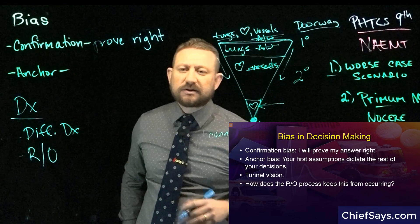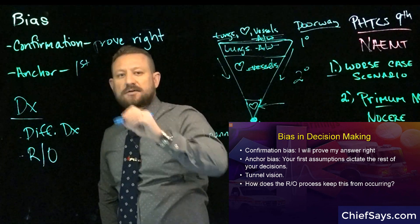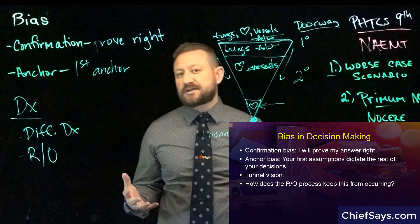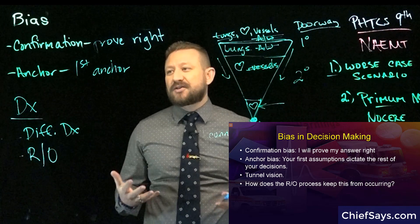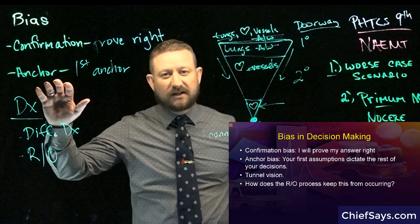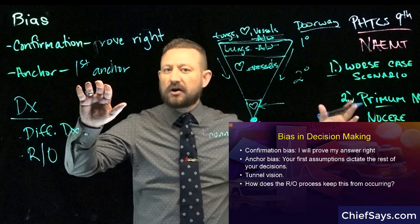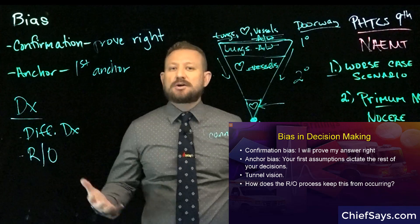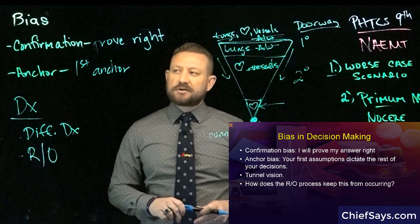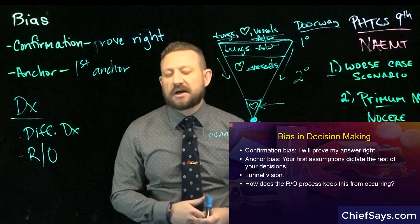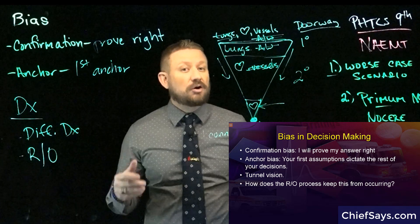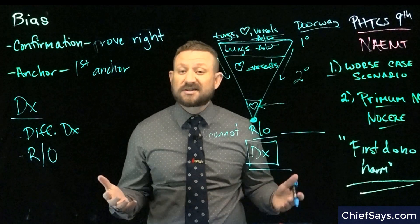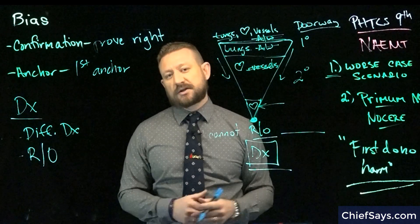Anchor bias is similar: our first assumption becomes the anchor for all of our other assumptions. When we're assessing the patient, we may look only at things that prove it's this thing, and regardless of other information we receive, we stick with our first choice. These are probably big ego risks in our patient care. Whichever type of bias infects our process, it will steer us away from truth, muddy our assessment and analysis, and will probably cause us to miss something big — miss the worst case scenario.